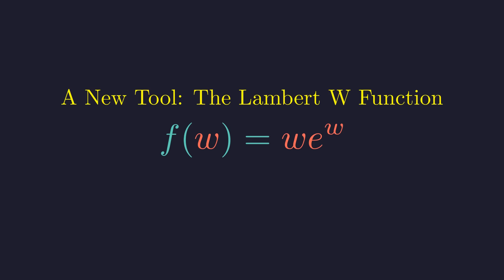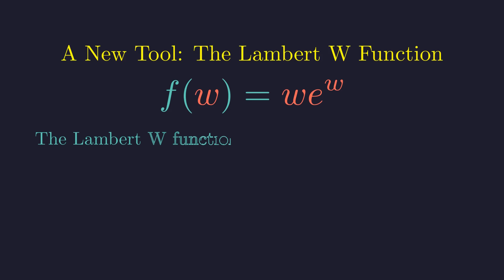You cannot use elementary algebra to solve y equals W times E to the W for W. So, mathematicians gave a name to this inverse. The Lambert W function, written as W, simply undoes the operation of multiplying a value by E to that same value.